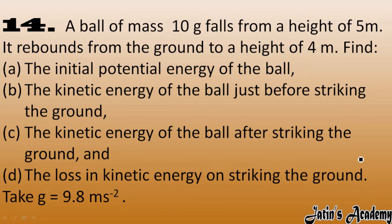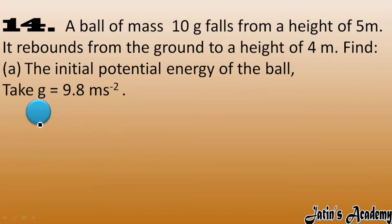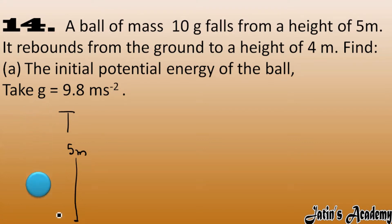A ball of mass 10 grams falls from a height of 5 meters and rebounds from the ground to a height of 4 meters. We need to find: the initial potential energy of the ball, kinetic energy just before striking the ground, kinetic energy after striking the ground, and loss in kinetic energy on striking the ground. Take g as 9.8. Looking at the picture, the ball is initially at 5 meters height and rebounds to 4 meters.